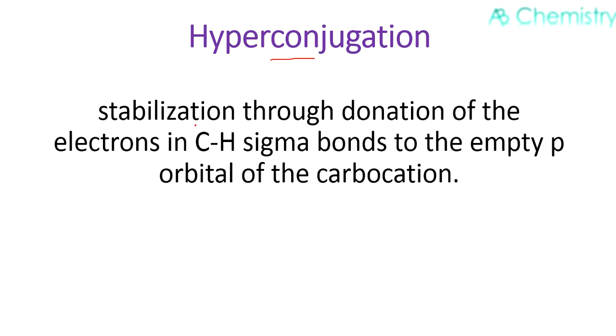Another factor which is used to explain the stability order is hyperconjugation. It is nothing but the stabilization through the donation of electrons in the C-H sigma bonds to the empty p orbitals of the carbocation.